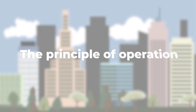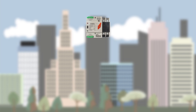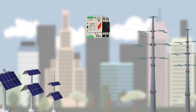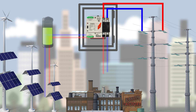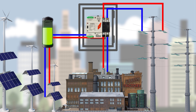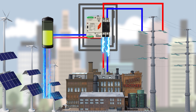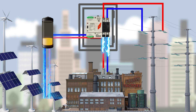The principle of operation of the device is that you can connect several sources of electricity to a consumer. For example, you can use alternative energy sources such as solar panels, wind generators, or conventional generators that replenish the battery charge and supply voltage.